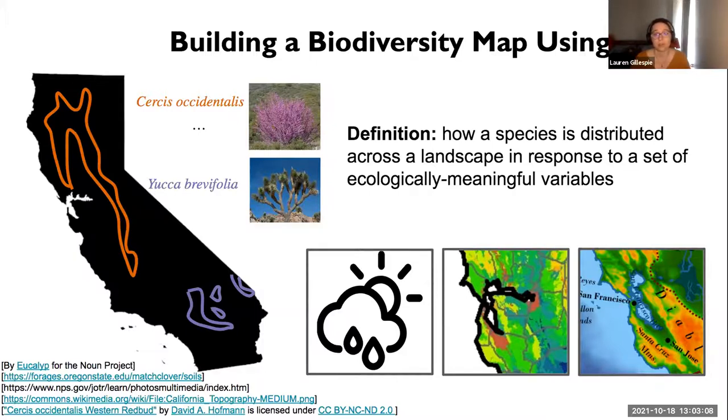One major hurdle to accurate biodiversity modeling is the power law relationship between the abundance of different species in an environment — with few species being relatively abundant while many more are rare. This commonness of rarity, confounded with the differential detectability of species, can lead to misestimations of where species live, commonly known as Wallacean shortfall. To overcome these confounding factors, many biodiversity maps employ species distribution models (SDMs), which model how the distribution of a species varies in response to ecologically meaningful variables.